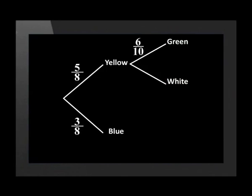Of the ten balls, six of them are green and four of them are white. Did you notice that these two fractions also add up to one? The beauty of a tree diagram is that it can represent all the possibilities. So far, our diagram represents what could happen if we first picked a yellow ball. Now, let's complete the diagram.